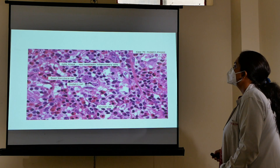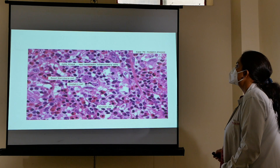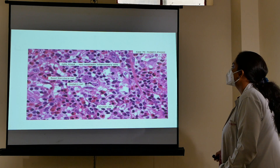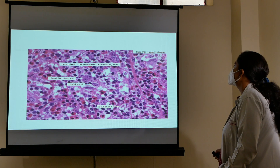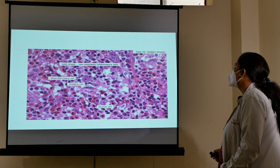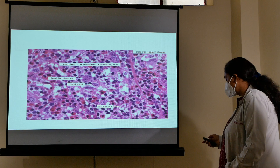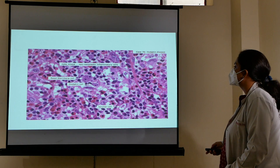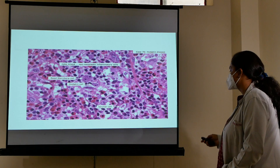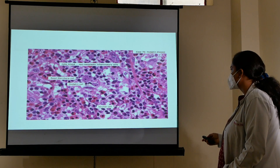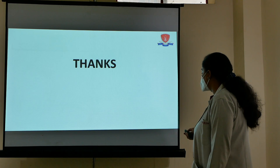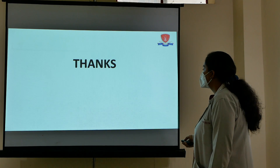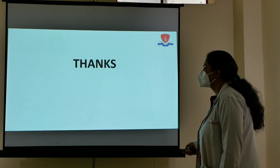To summarize: in Hodgkin's lymphoma, there is a polymorphous population in the background along with RS cells — which may be bilobed, mononuclear (Hodgkin's cell), lacunar type, or popcorn cell — combined with other features of lymphoma. Thank you everyone, that completes the lecture.